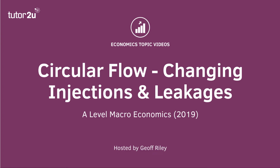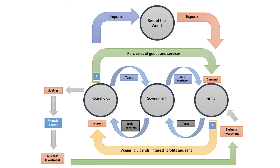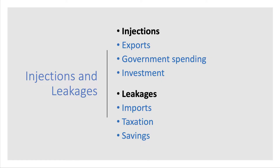Welcome to a macroeconomics video. In this exercise we're going to look at some examples of changes in injections and leakages in the circular flow model. A previous video took you through how we built up this model of the macro economy involving a trade sector and a financial sector. The key of course is the domestic circular flow between households and firms. In the full model there are three injections of demand.